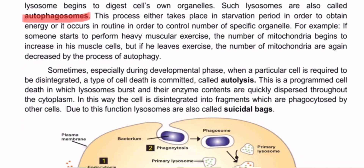When a particular cell is required to be disintegrated, a type of cell death is committed called autolysis. This is a programmed cell death in which lysosomes burst and their enzyme contents are quickly dispersed throughout the cytoplasm.